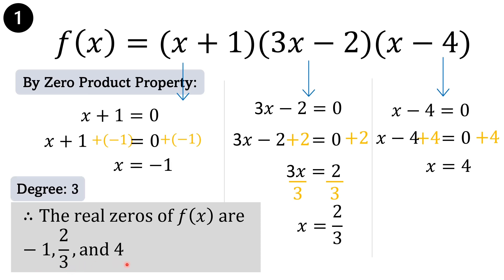The degree of the function is 3. The real zeros are 3: negative 1, 2 thirds, and 4. Therefore, the zeros of this polynomial function are complete.